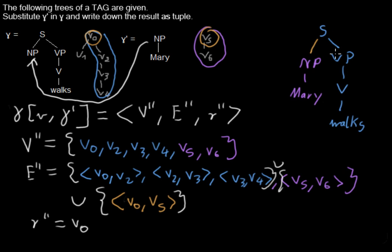And as you can see here, this NP node here, it looks the same like this one, but it was actually substituted by the second tree. So this is actually the node V5 and it's not V1 from the first tree. And this is our new tree after substitution of gamma bar into gamma.